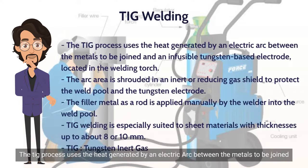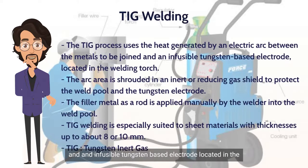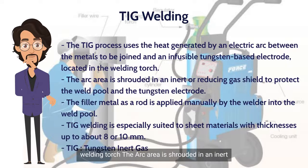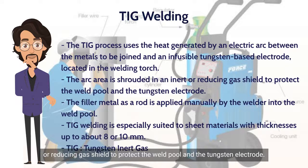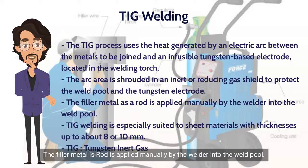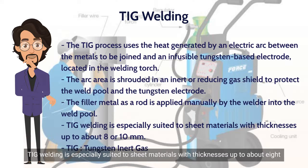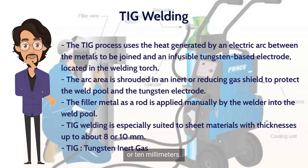The TIG process uses the heat generated by an electric arc between the metals to be joined and an infusible tungsten-based electrode located in the welding torch. The arc area is shrouded in an inert or reducing gas shield to protect the weld pool and the tungsten electrode. The filler metal, as a rod, is applied manually by the welder into the weld pool. TIG welding is especially suited to sheet materials with thicknesses up to about 8 or 10 millimeters.